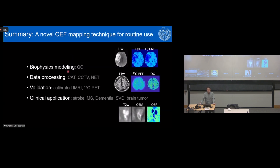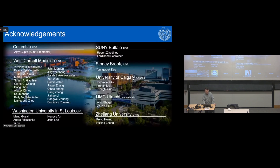In conclusion, this work presents a novel OEF mapping technique for routine use, including biophysics models such as QQ, data processing algorithms (CAT, CCTV, and NET) to solve the model robustly, validation against calibrated fMRI and 15-O PET — critical for clinical application — and initial clinical applications in stroke, multiple sclerosis, dementia, small vessel disease, and brain tumor. Thank you to my collaborators and thank you for listening.